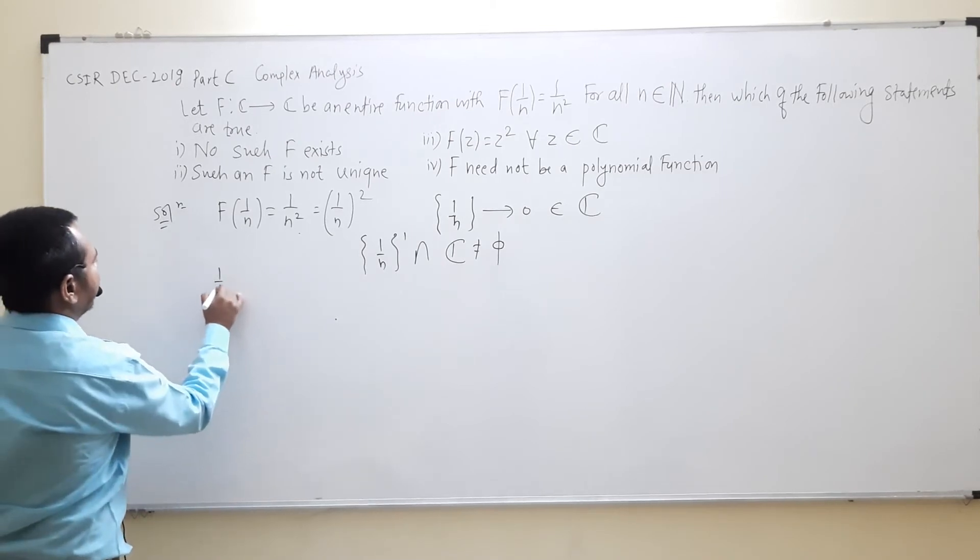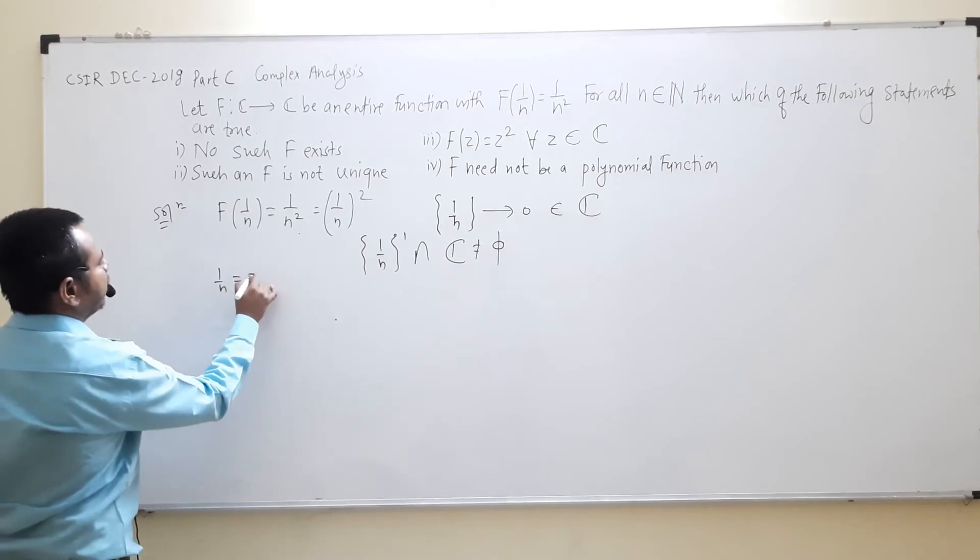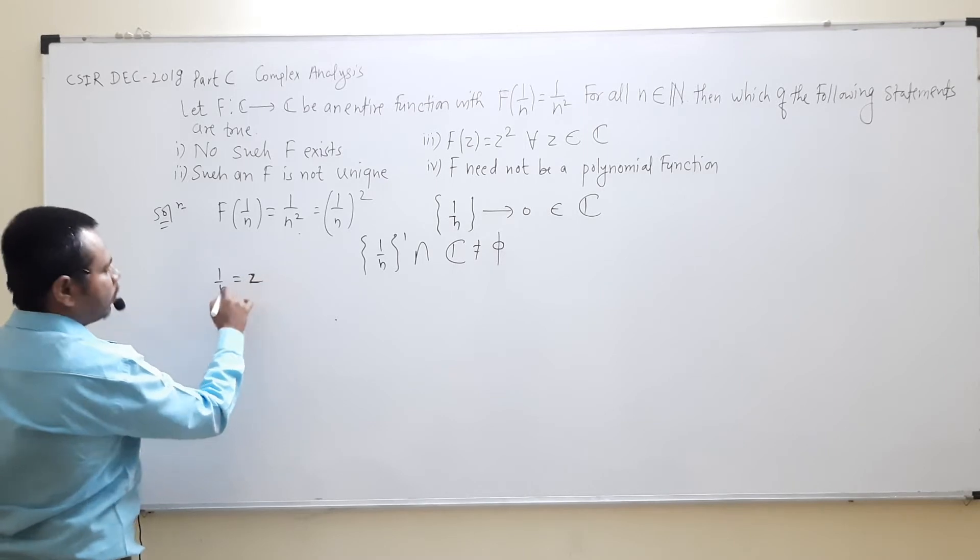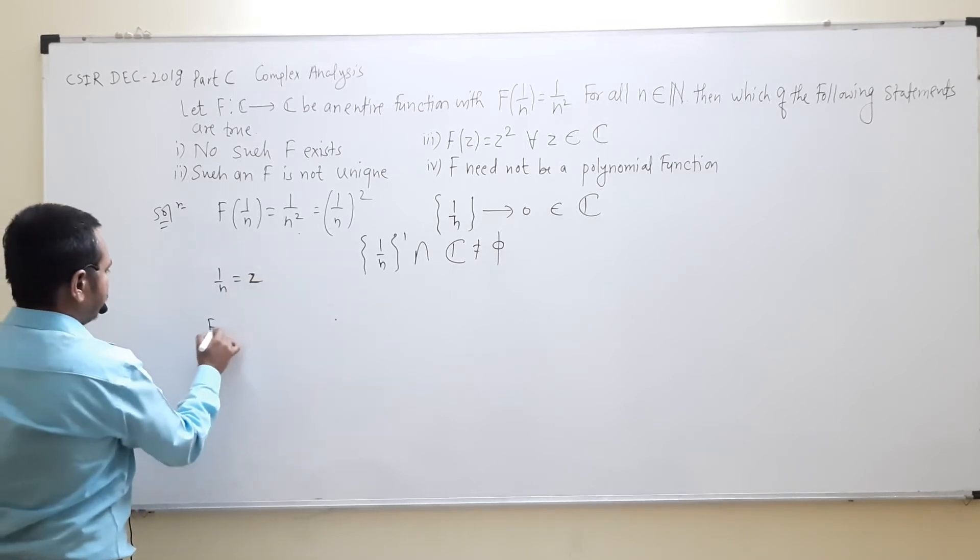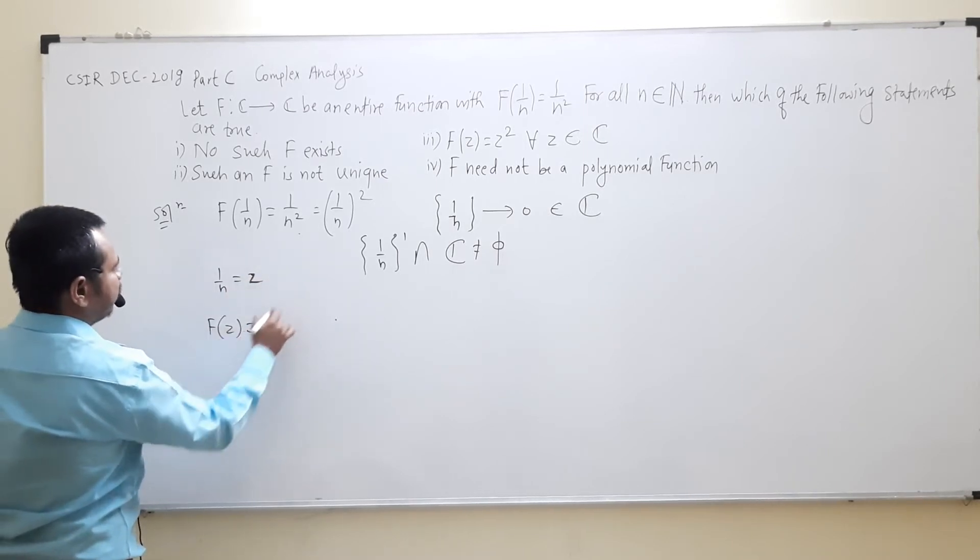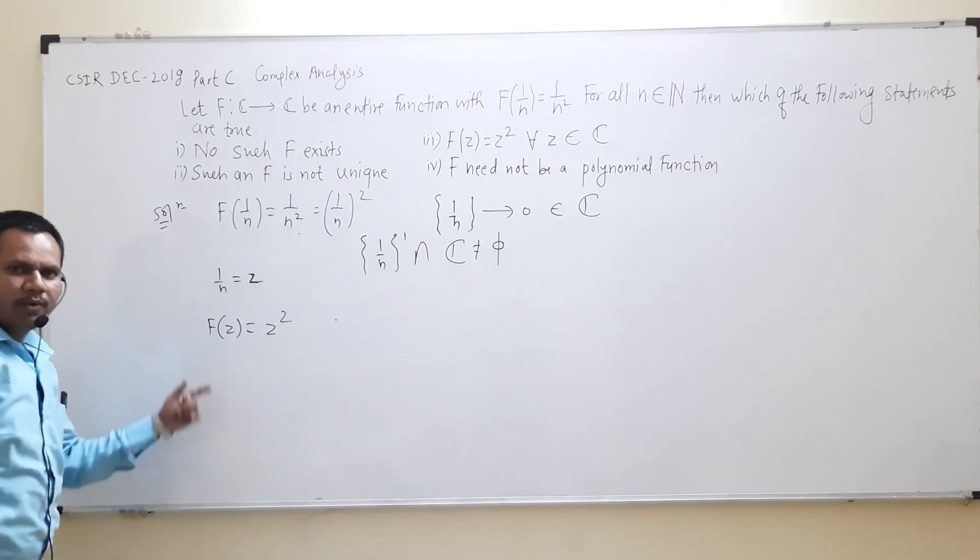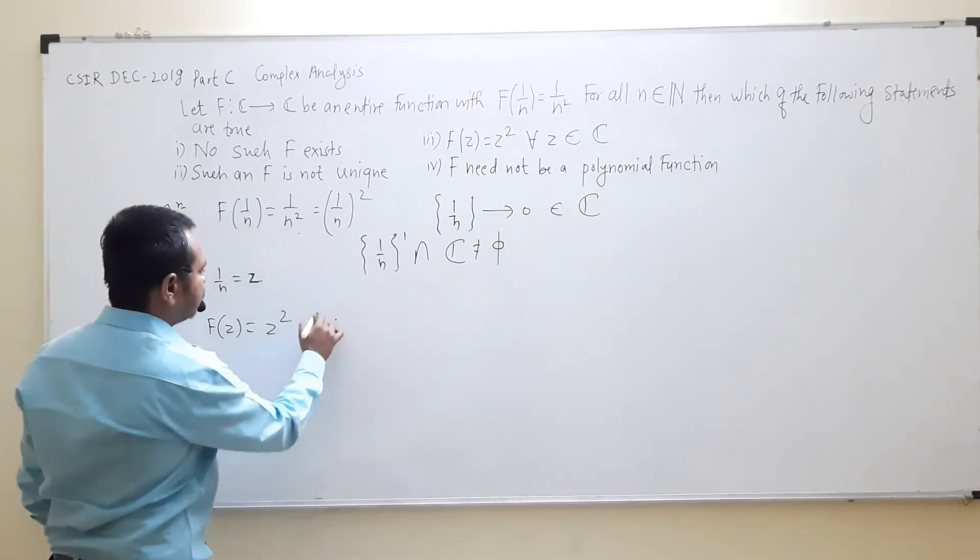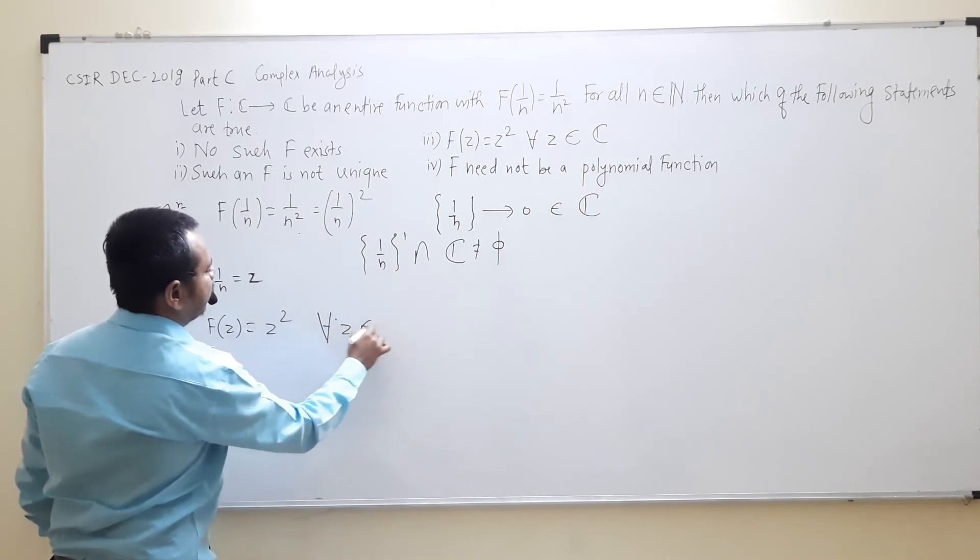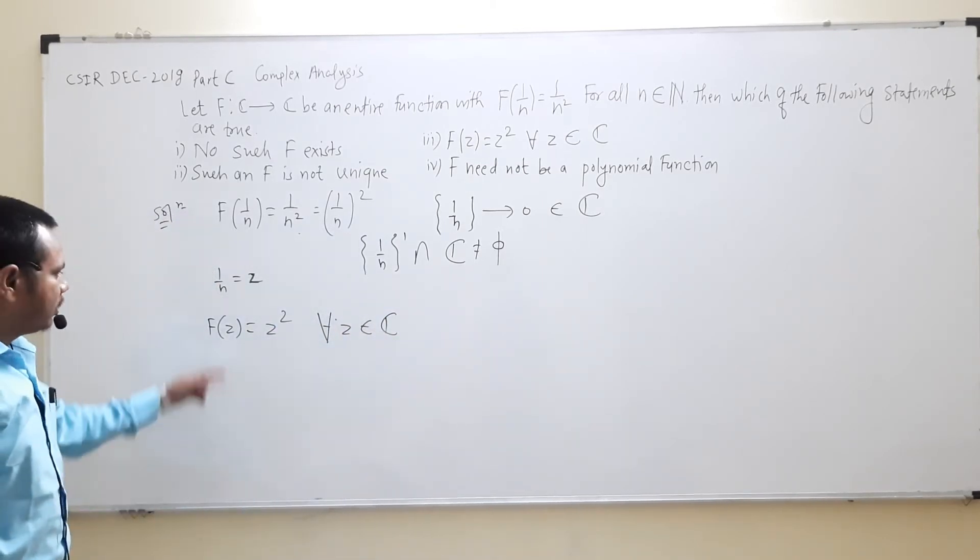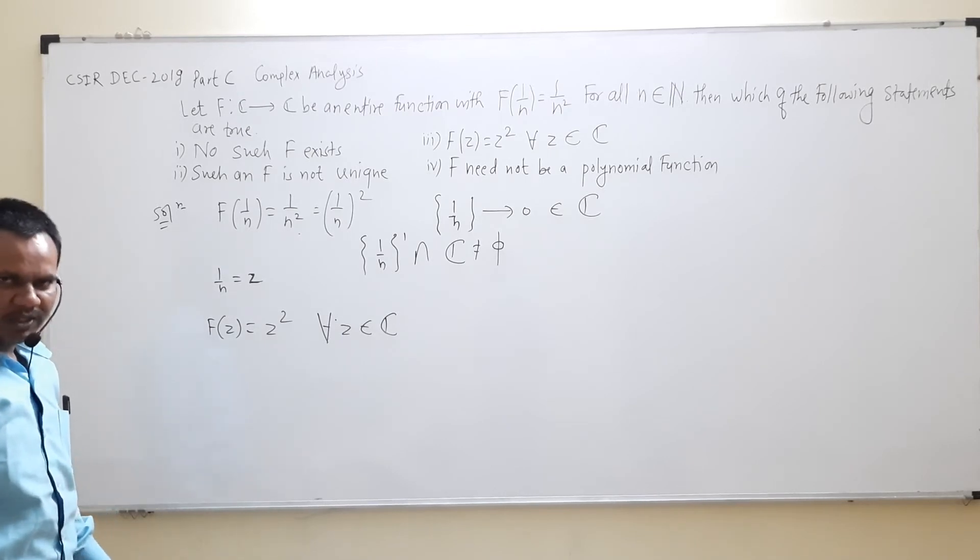What we will get then? f(z) equal to, now instead of 1/n we are putting z, so here we are getting f(z) equal to z² for all z belongs to C. This is our required function.